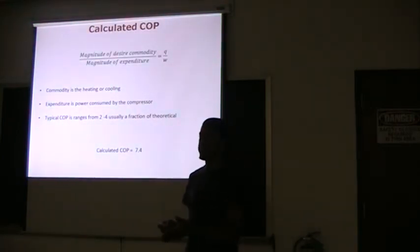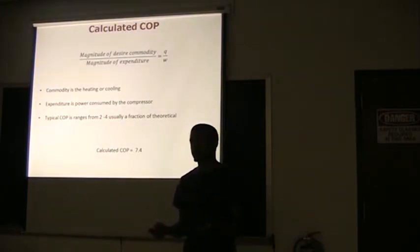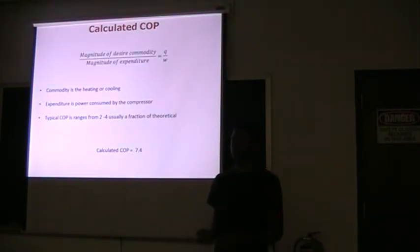And theoretically, the value that you calculate is usually only a fraction of the idealized value. The value that I calculated is using the pressures given from the lab manual. I got a COP of 7.4, which normally idealized would be anywhere from two to four. So that is a fraction of the 7.4 that I calculated.